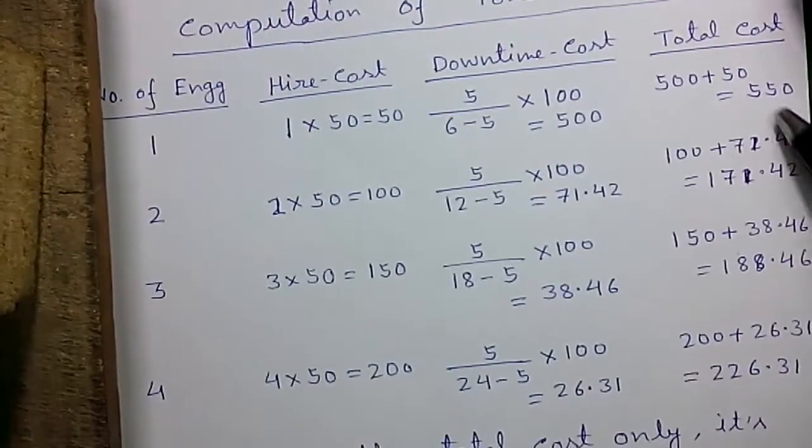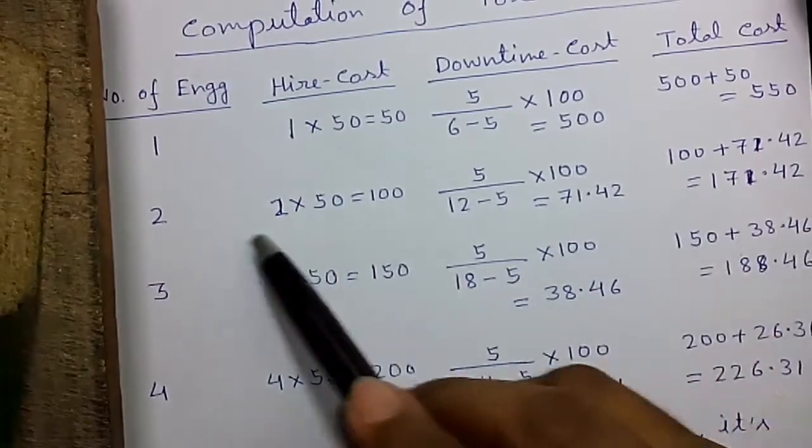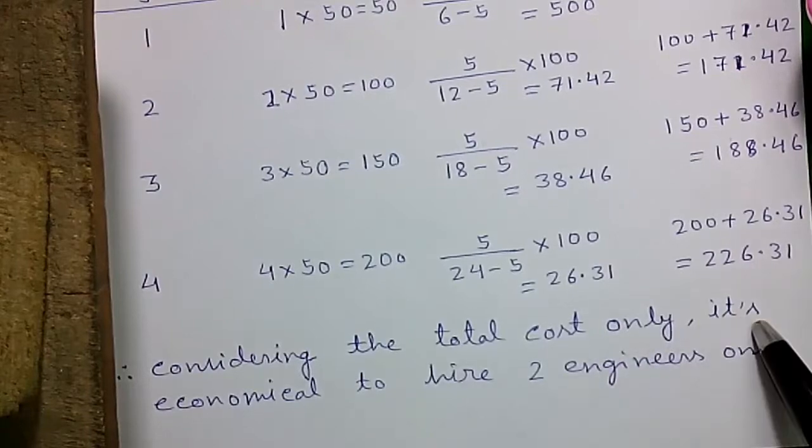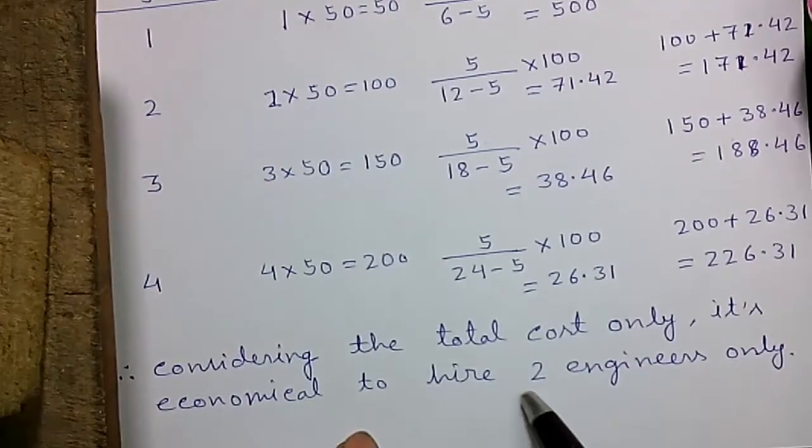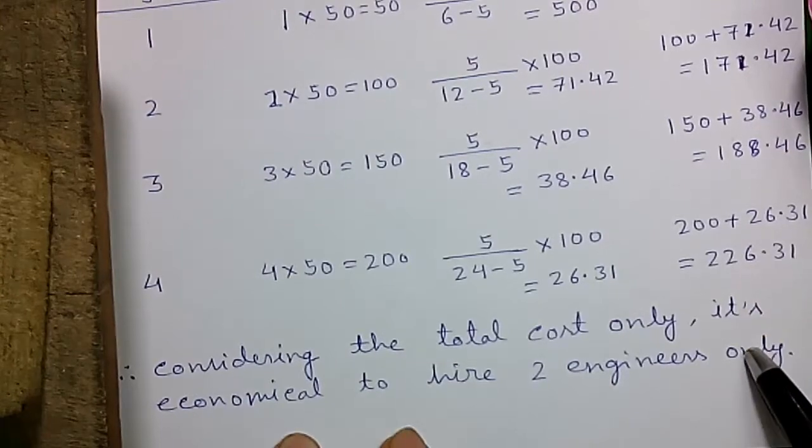By comparing all the 4 values, we can say the total cost is lowest for 2 engineers. By considering the total cost only, it's economical to hire 2 engineers.